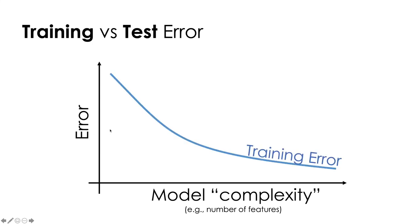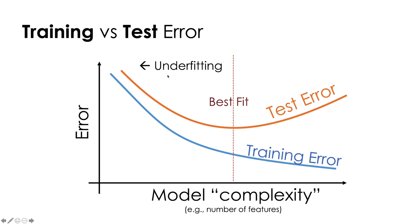This is a cartoon, but a lot of problems will have this structure. As we increase the model complexity, our training error is going to continue to go down. We're going to improve our ability to fit the data by admitting more complex functions. But at some point, our test error will go down and then go back up. Our goal is to find this point in the middle where our test error is the lowest.